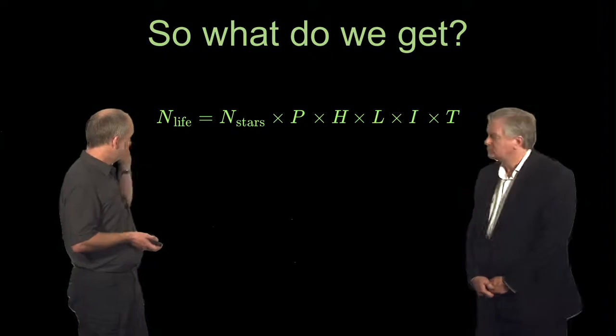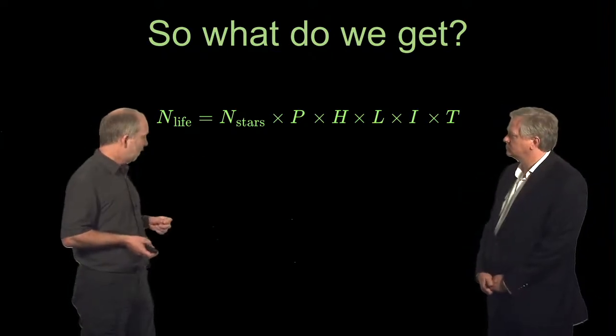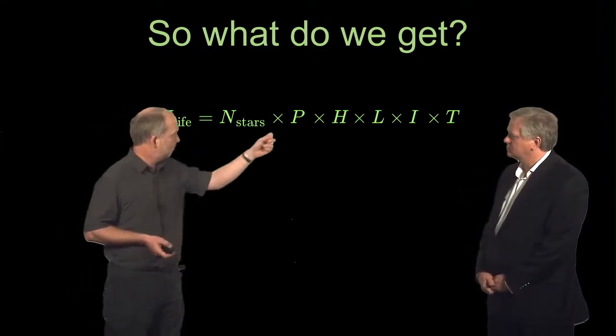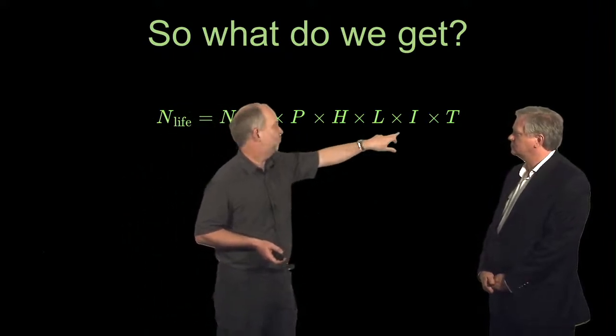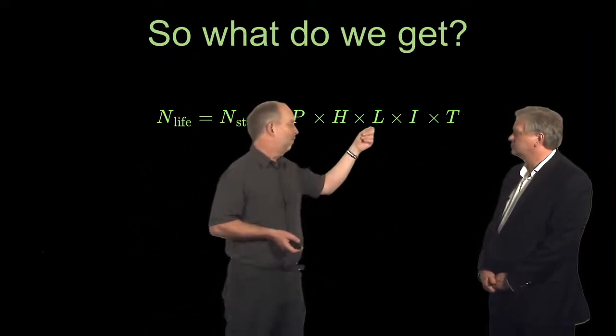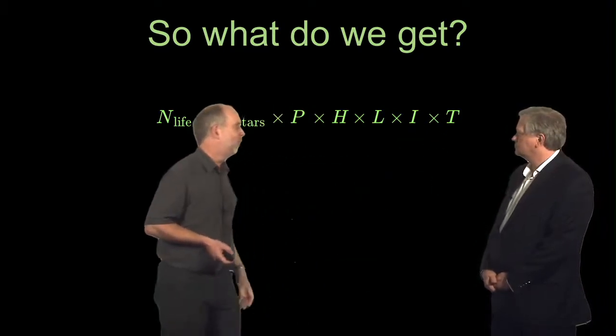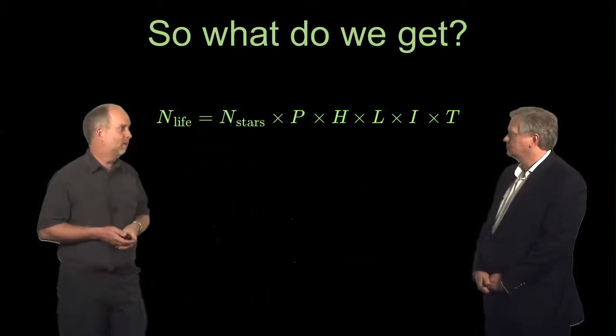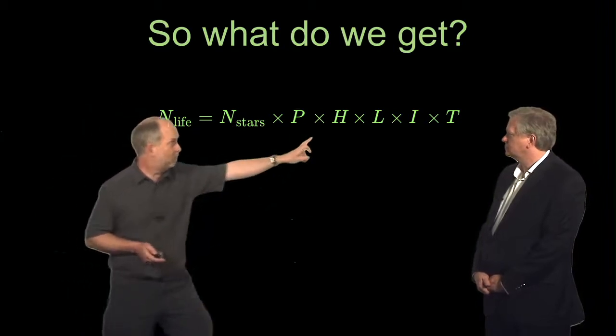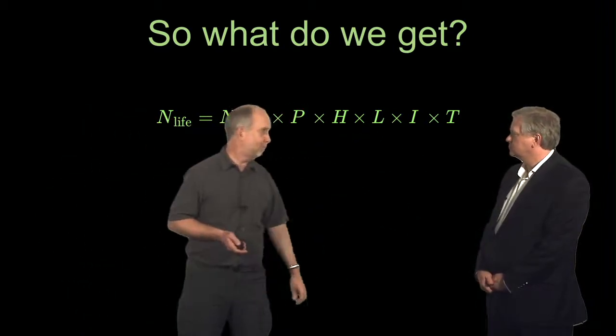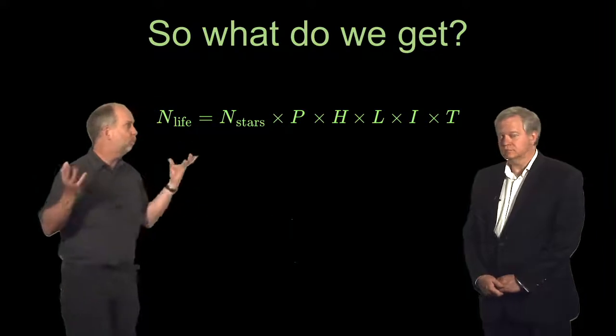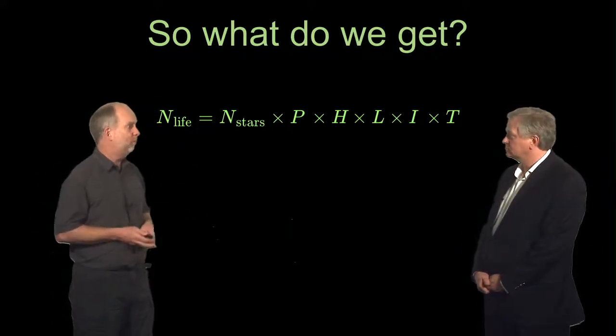So what do we get? Full Drake equation. And we know this term, know that term, some idea of this one. It's these three that are the killers. What are the odds of forming life? What are the odds of life forming intelligence? What are the odds of it hanging around for any decent length of time? And really, we get any answer we like. We could come up with perfectly plausible values for all of these things that mean we are alone in the universe despite this huge number of stars, or the universe is teeming with life. We really don't know.